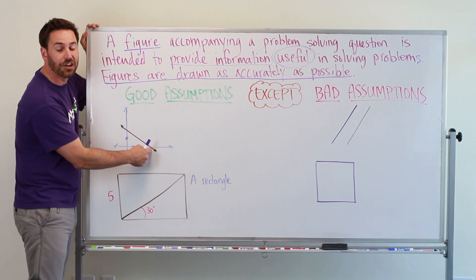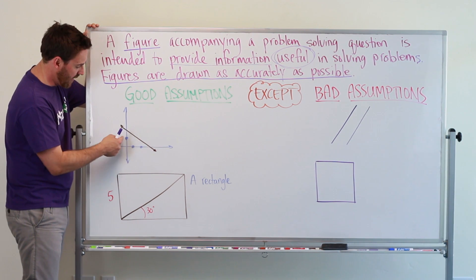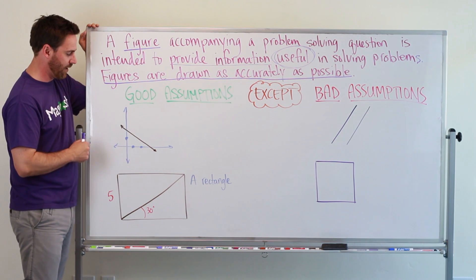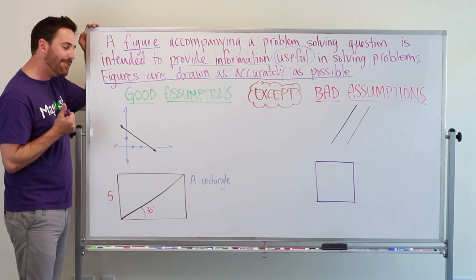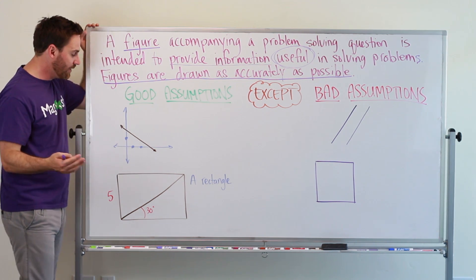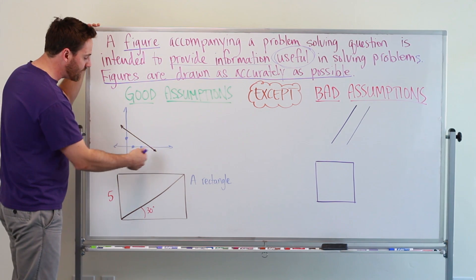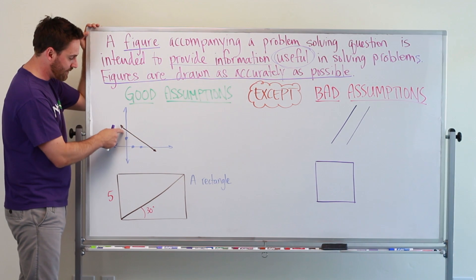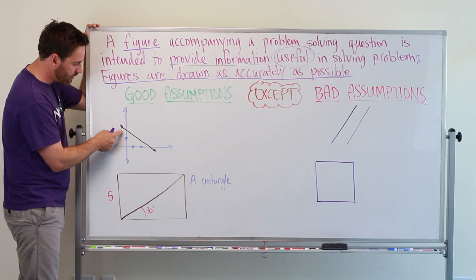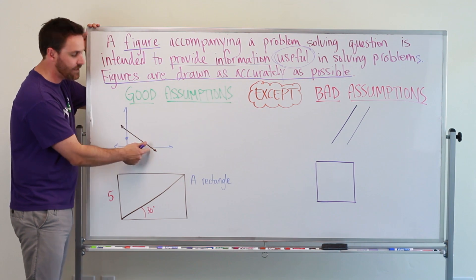And then there's a dot there, and the line goes through right there. So we can safely assume that the line is crossing the y-axis at 2 and the x-axis at 3.